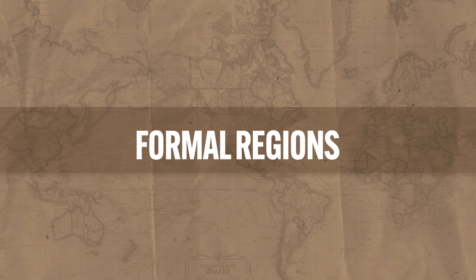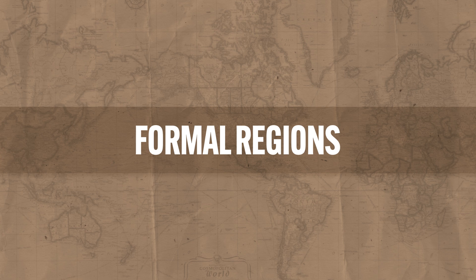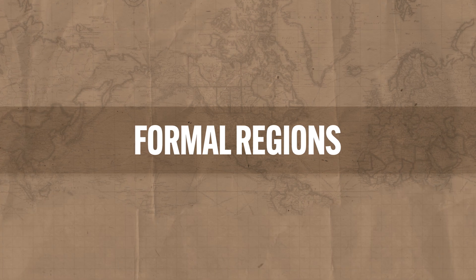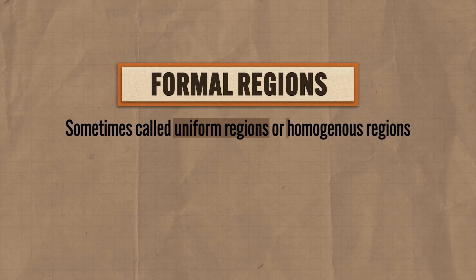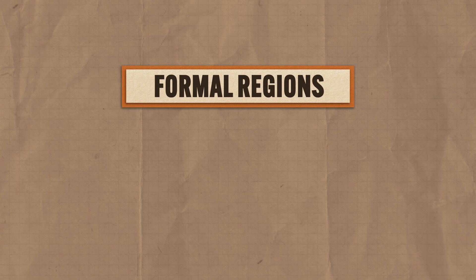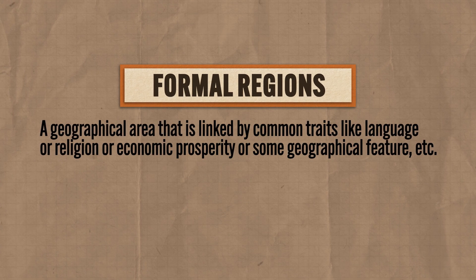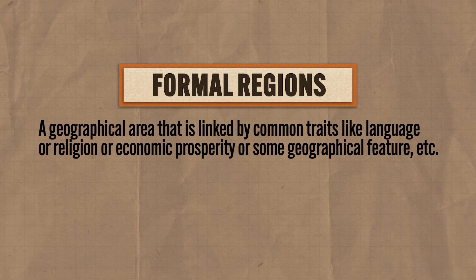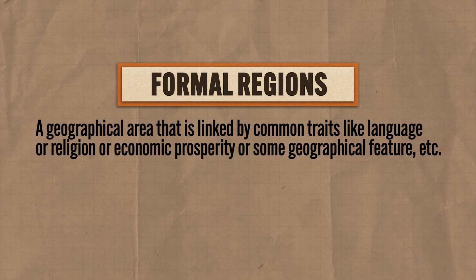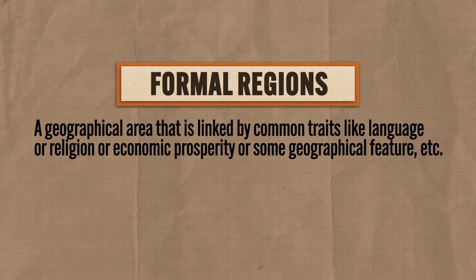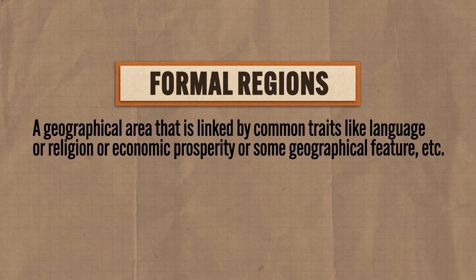So let's talk about the three main types of regions you need to know. First is formal regions. These are sometimes called uniform regions or homogenous regions — they're all the same thing, so don't get confused. A formal region is a geographical area that is linked by common traits like language, religion, economic prosperity, or some geographical feature.